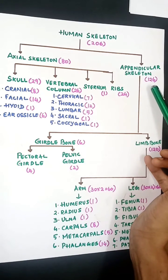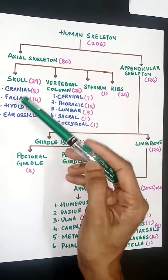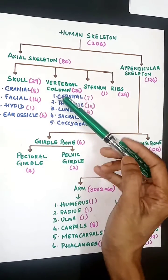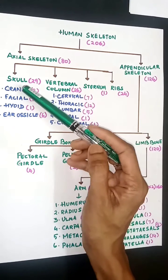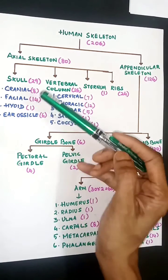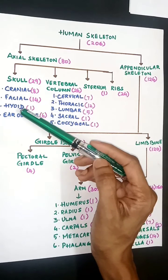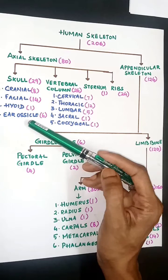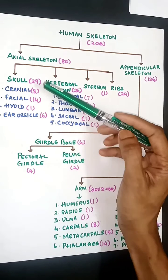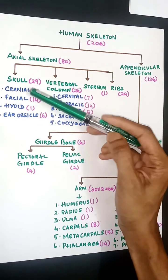Under axial skeleton, you have skull, vertebral column (the backbone), sternum, and ribs. The skull has 29 bones: cranial 8 bones, facial 14 bones, hyoid bone which is present in the neck, and ear ossicles, 6 in total. So 29 bones come under skull.